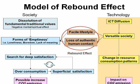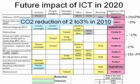Our definition of the rebound effect leads to the next evaluation. Many researchers in Japan have been studying ICT impact on CO2 emission. The result shows a CO2 reduction of 2 to 3 percent in 2010 in comparison with emissions in 2000.